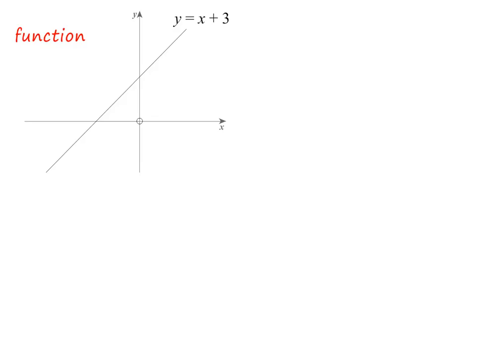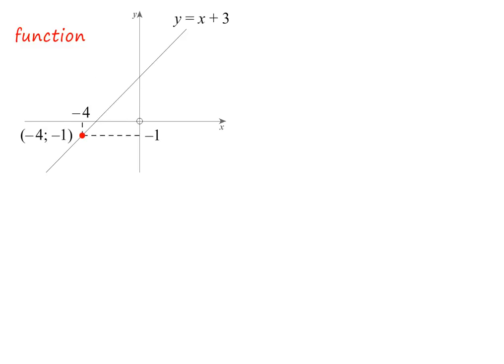Here is the graph of the function y equals x plus 3. The reason it is a function is because if you choose any x value, it will only ever be linked to one y value. Here the x value 2 is linked only to the y value 5. And if we choose another x value, say minus 1, it will again be linked to only one y value, in this case 2. And if we choose the x value minus 4, it is clearly linked to only one y value, in this case minus 1.